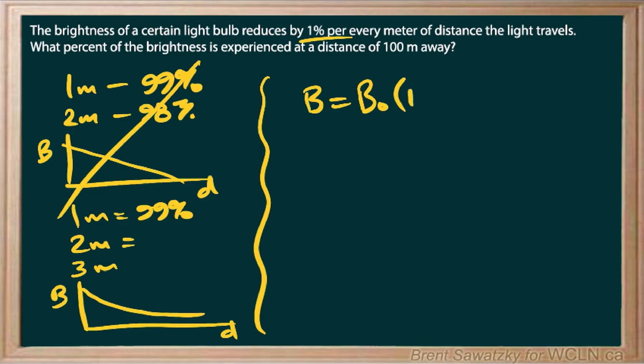Now it's a decay, so we're subtracting, and we're subtracting the 1% each time. So that would be 99% of the original value for each meter. And so our D is our distance away from that light bulb in meters. And so here's our relationship.